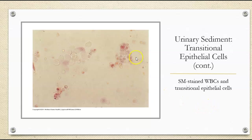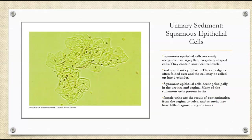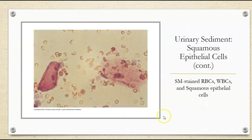These are stained — here are white blood cells and then you have some transitional epithelial cells. Then squamous epithelial cells — we are often seeing these in the urine, especially in a non-midstream clean catch urine. They're easily recognized because they're flat, irregular-shaped cells with a small central nucleus and lots of cytoplasm. Sometimes we can see them rolled or folded over, or cylindrical. These occur primarily in the urethra and the vagina. Many of these squamous cells in a female are contamination from the vagina and the vulva, so typically they're not having any diagnostic significance. You can see some red blood cells in the dumbbell shapes on their sides, and then the stained squamous epithelial cells.